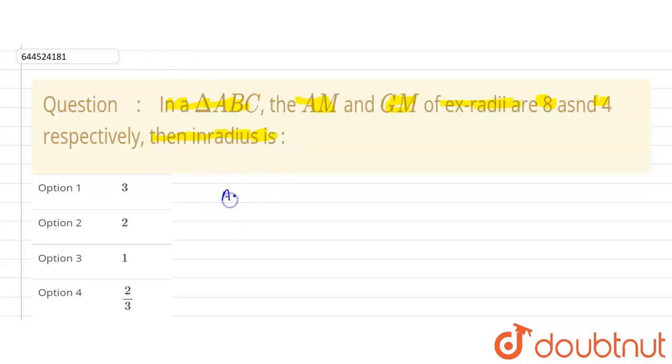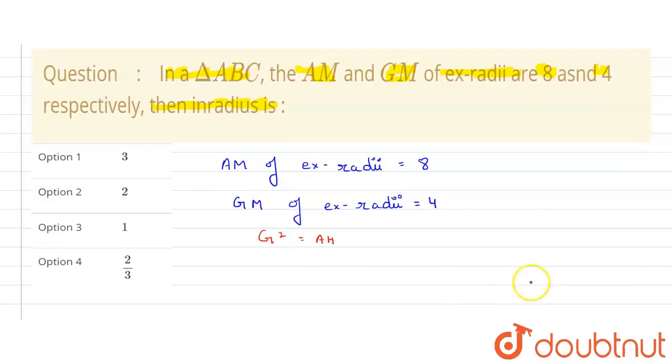It is given that AM of ex-radii equals 8, and similarly GM of ex-radii equals 4. We know the formula that G squared equals A times H, where G is GM, A is AM, and H is harmonic mean.